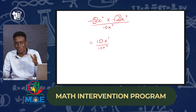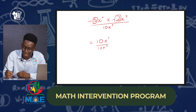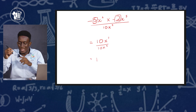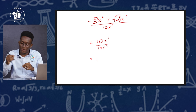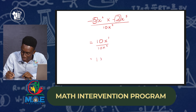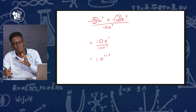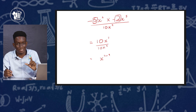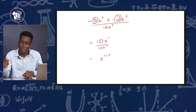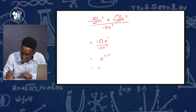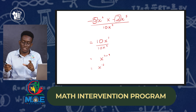Now we divide: 10 divided by 10 gives 1, and x to the seventh divided by x to the ninth gives x to the power of 7 minus 9, which is x to the negative 2. In algebra we don't write the coefficient of 1 explicitly, so we have x to the negative 2.